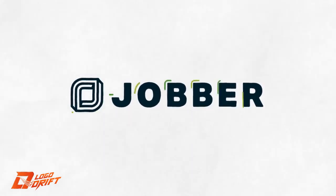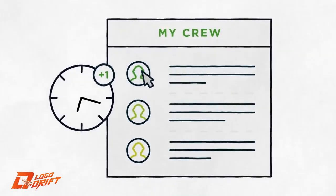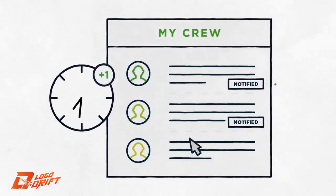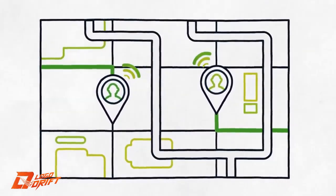Jobber simplifies so many aspects of your business, like scheduling. When a job comes in, you just assign the work, and Jobber notifies your employees instantly. You can even track their progress in the field, so everyone's in the right place at the right time.